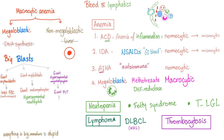What else? Thrombocytosis. Why? Because Rheumatoid arthritis is a chronic inflammation. Watch my video on thrombocytosis — it's in my bleeding and coagulation disorders playlist.